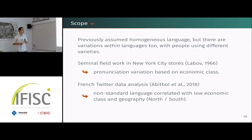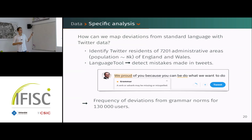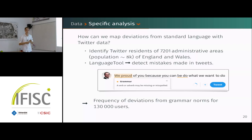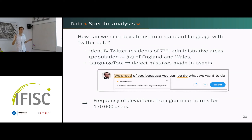The first thing we did was to map deviation from standard language using our data. We focused on England and Wales, and our spatial partitioning uses the MSOA — about 7,000 administrative areas with a population of roughly 8,000 each. We first identified from the data people we could consider residents of one of these areas.